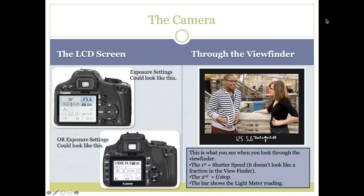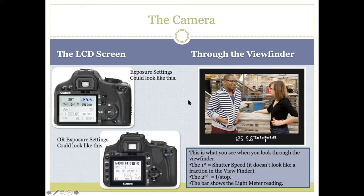Let's start talking about how to put all three of these together: the aperture, the shutter speed, and the ISO. It's really important to know where to find those on your camera. Hopefully you've watched the other videos I provided where I show you what the camera looks like and where to find these things and all the different buttons on your camera.